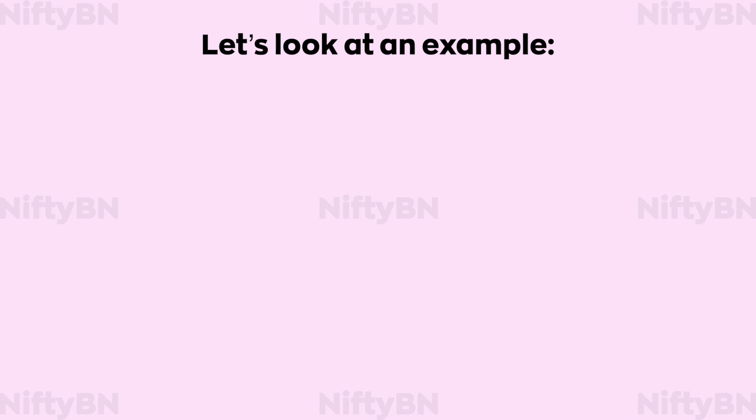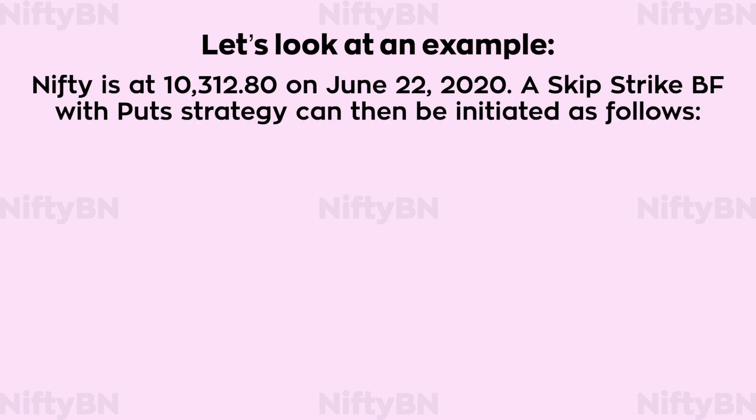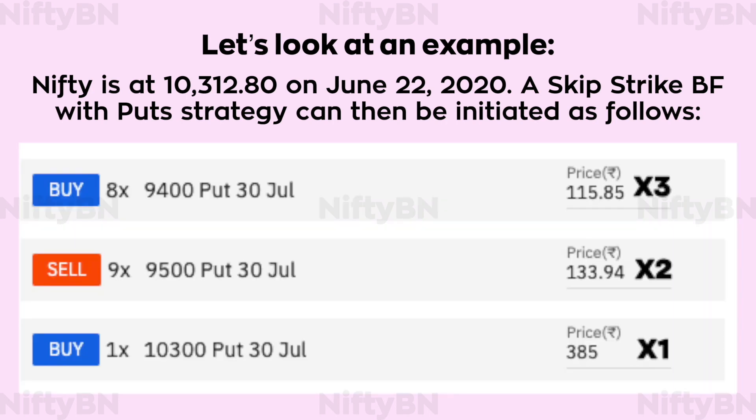Nifty is at 10,312.80 on June 22, 2020. A skip strike butterfly with puts strategy can then be initiated as follows: buy 1 lot of 30th July 10,300 strike price put at 385, sell 9 lots of 30th July 9,500 strike price put at 133.94, and buy 8 lots of 30th July 9,400 strike price put at 115.85.